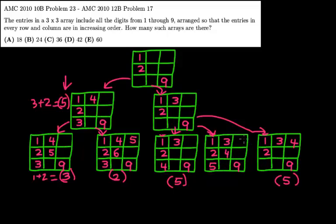So where can we put the 6? The 6 can be either here or here. Now, if the 6 is here, then the 7 and 8 have to be here. If the 6 is here, then we have two choices, 7, 8 like this, or 8, 7 like that.